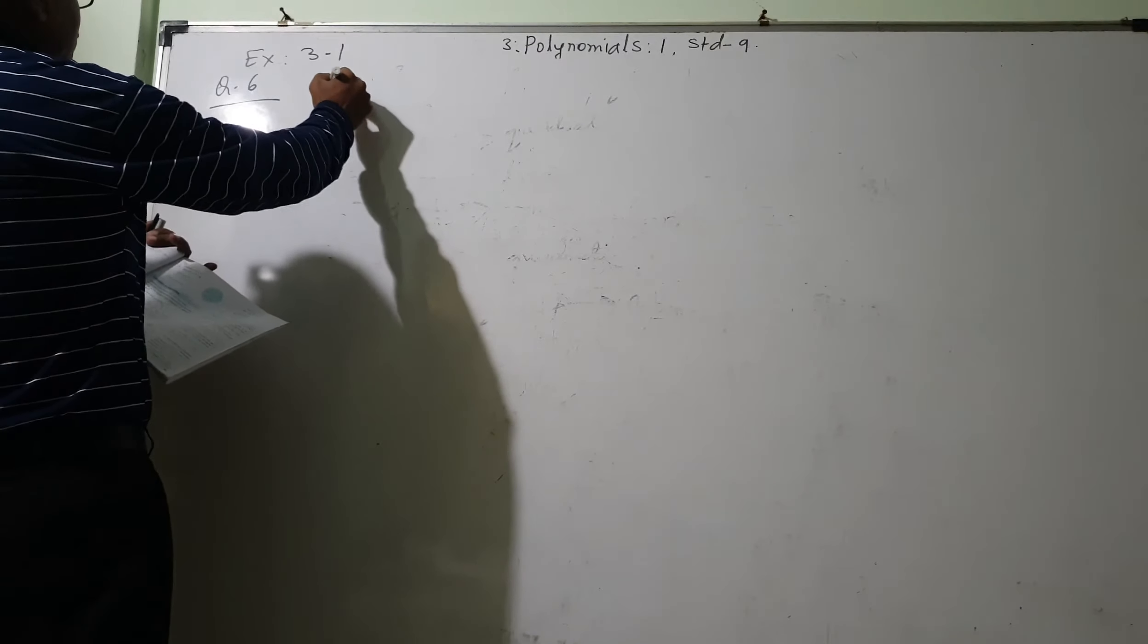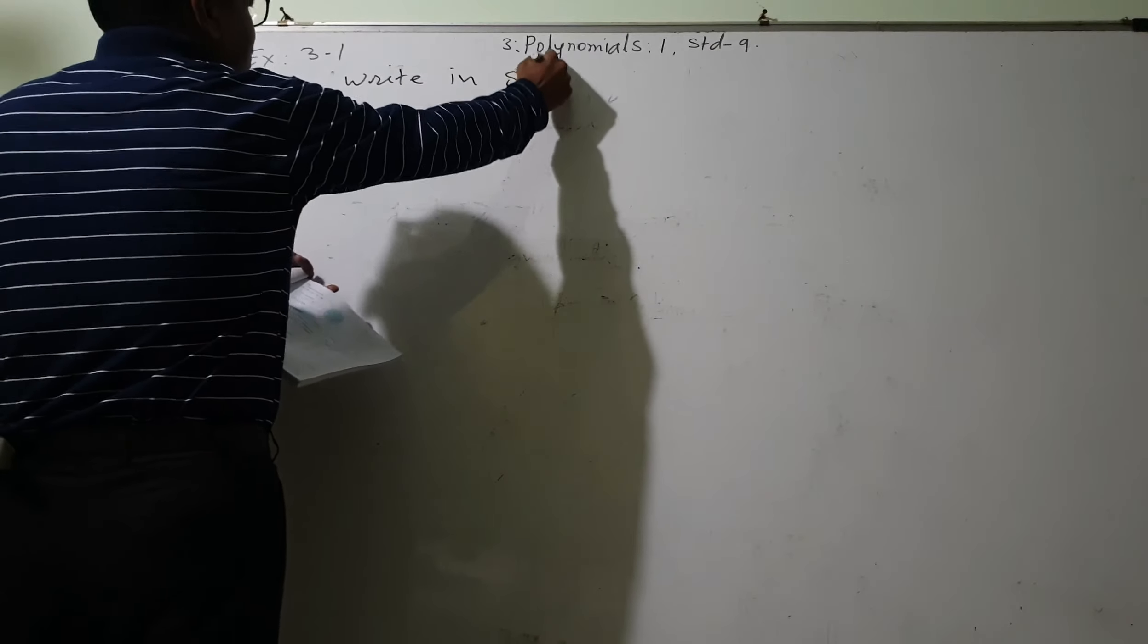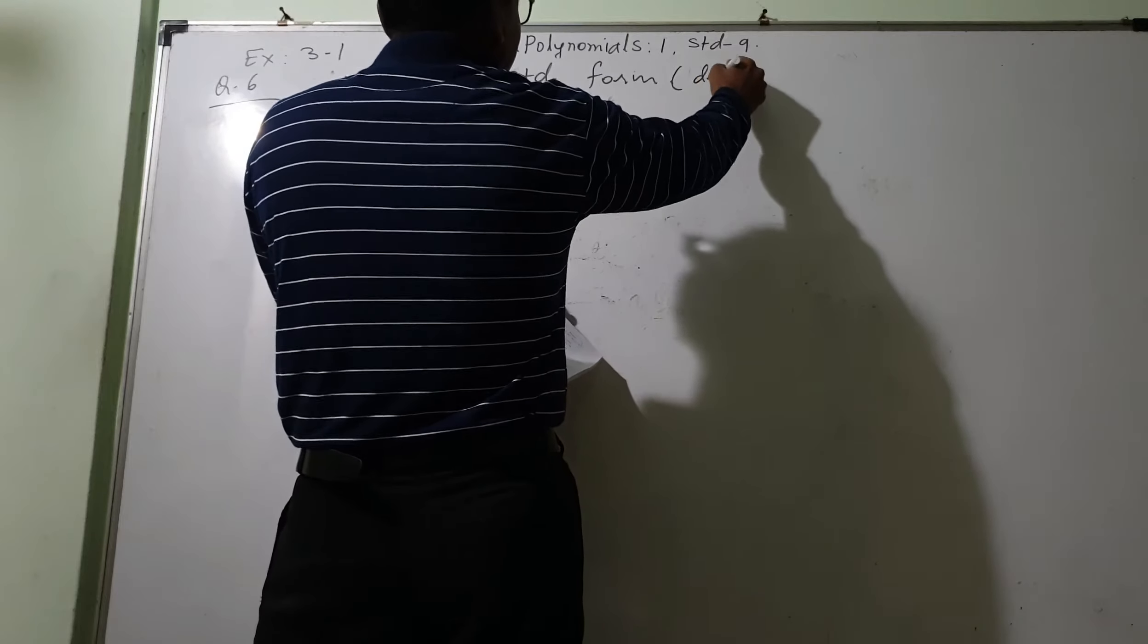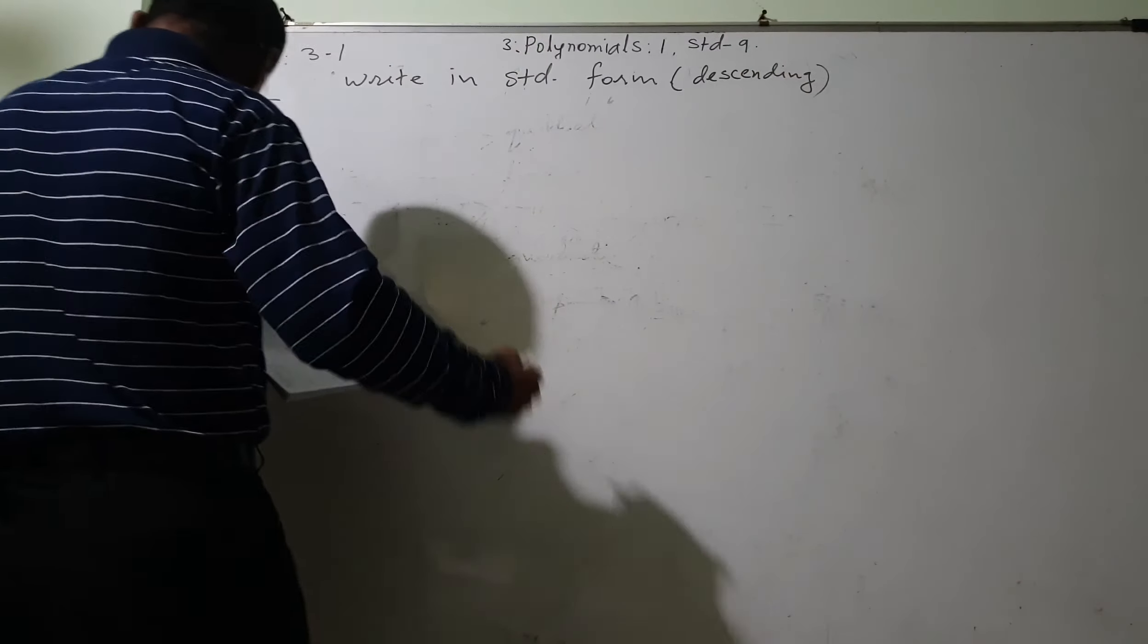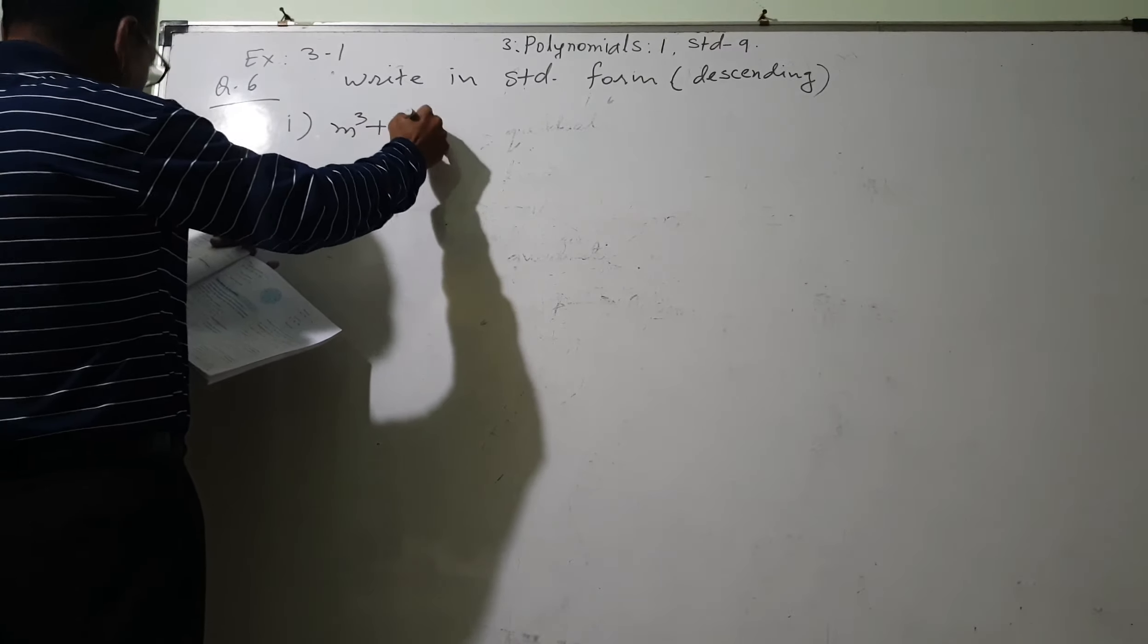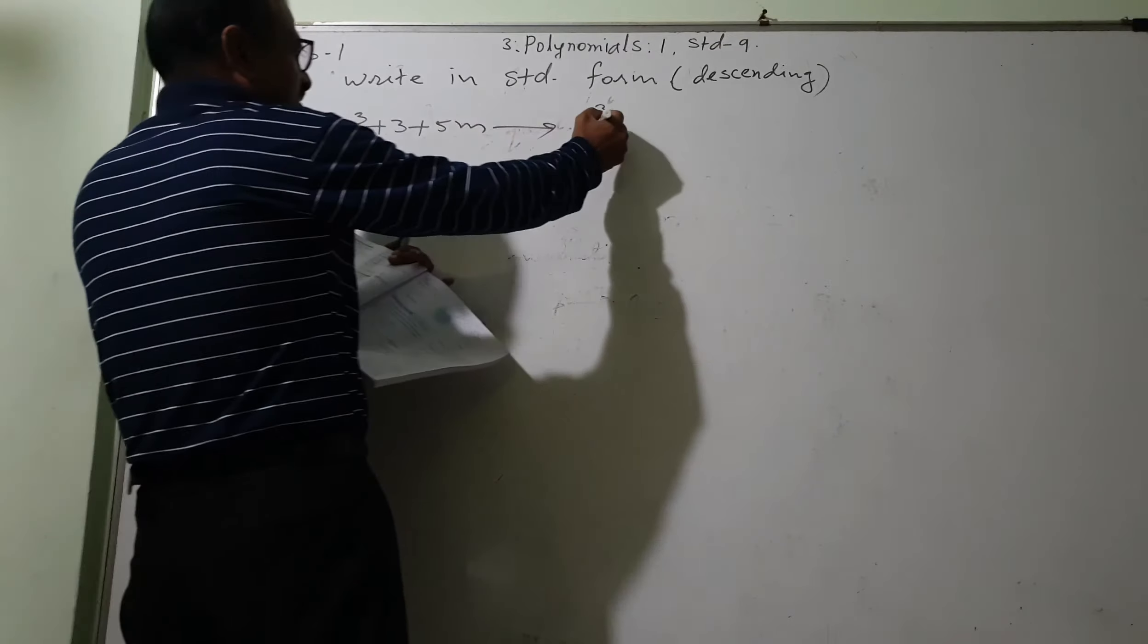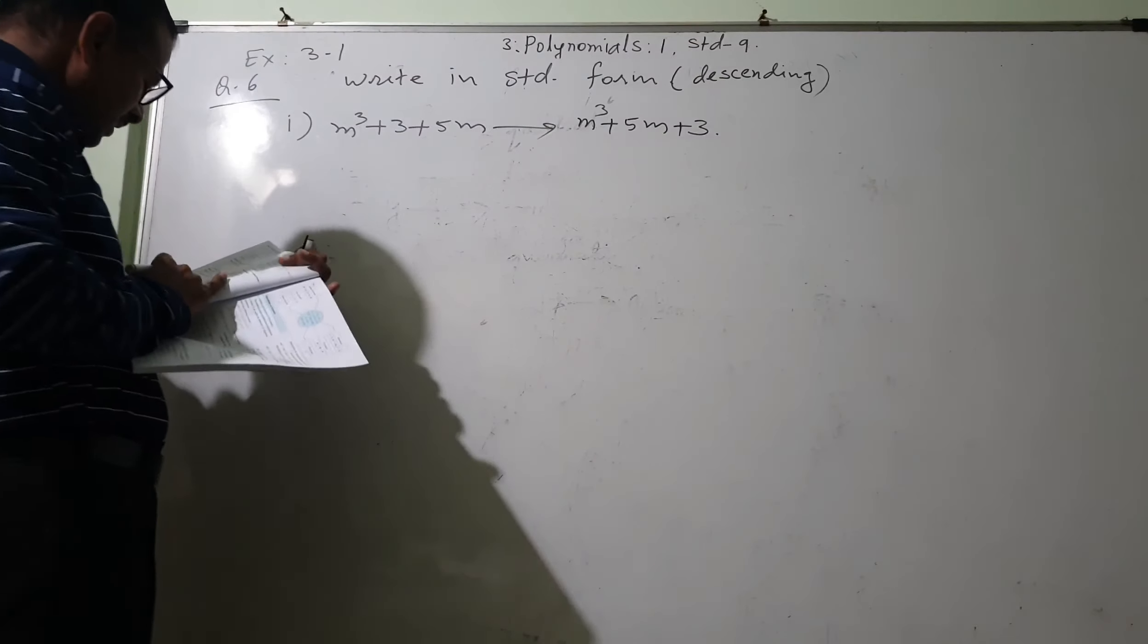Write in standard form. And it is called as they want descending form. Descending means power will go on descending. Number 1 is m cube plus 3 plus 5m. This I want in the descending order. So, m cube, then the power 1 plus 5m and plus 3. This way, this will be in the descending order.